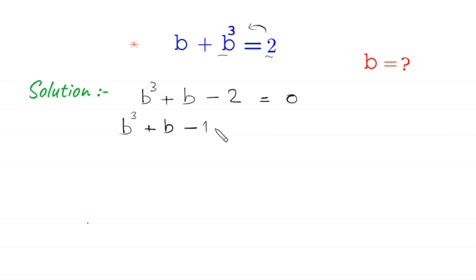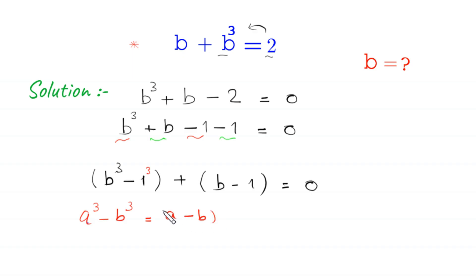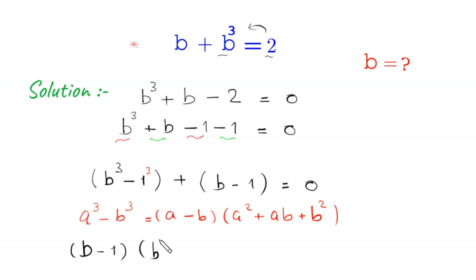Next, this negative 2 can be written as negative 1 minus 1. So we combine the terms b cubed and negative 1 together, and b minus 1 together, giving us b cubed minus 1 plus b minus 1 equals 0. Now by using the algebraic identity a cubed minus b cubed equals (a minus b)(a squared plus ab plus b squared).